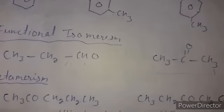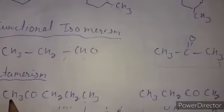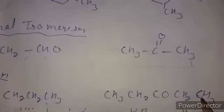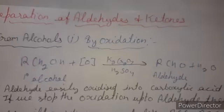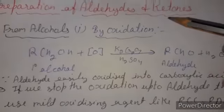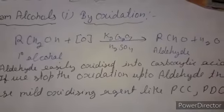The fourth type is metamerism, shown only by ketones and not aldehydes because ketone is a non-terminal functional group. By varying the alkyl groups on both sides of the carbonyl, we get metamers, similar to position isomers.